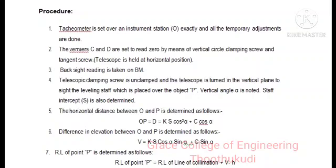Then the telescopic clamping screw is unclamped and the telescope is turned in a vertical plane to sight the leveling staff which is placed over the height of the building and the vertical angle alpha is noted.